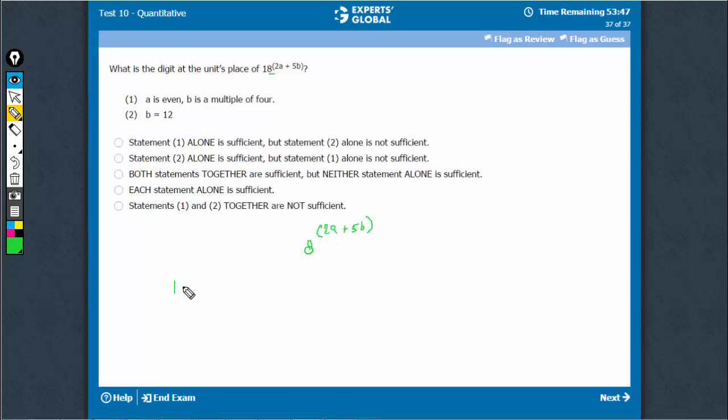Now, statement 1 says a is even. So this becomes a raised to power something which is a multiple of 4 and this is also a multiple of 4. So this entire thing will become a multiple of 4, 4 into something.